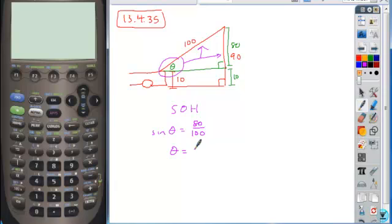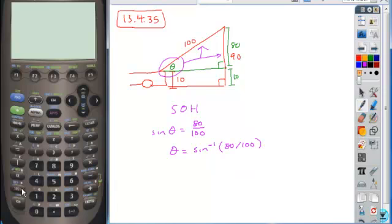And so we can solve for that angle measure by taking the inverse trig function of that ratio. So the inverse sine of 80 over 100, you can reduce your fraction too if you want. But if we calculate the inverse sine of this,